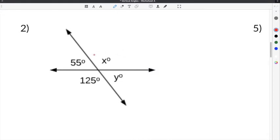Number two on our vertical angles worksheet gives us two missing angles, x and y, and also that one angle is 55 degrees and the other angle is 125 degrees.